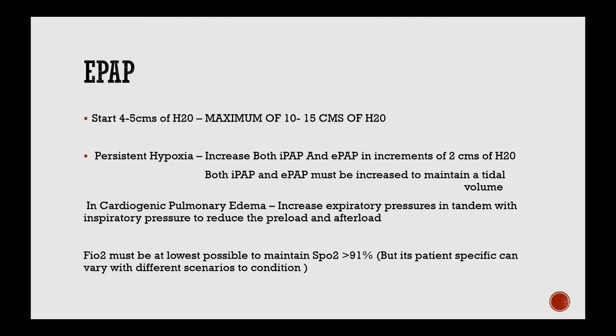EPAP should be started at 4–5 cmH₂O and can go up to a maximum of 10–15 cmH₂O. For persistent hypoxemia, increase both IPAP and EPAP in increments of 2 cmH₂O, maintaining the targeted tidal volume. In cardiogenic pulmonary edema, increase expiratory pressure in tandem with inspiratory pressure to reduce preload and afterload. FiO₂ must be kept at the lowest possible level to maintain SpO₂ greater than 91%.